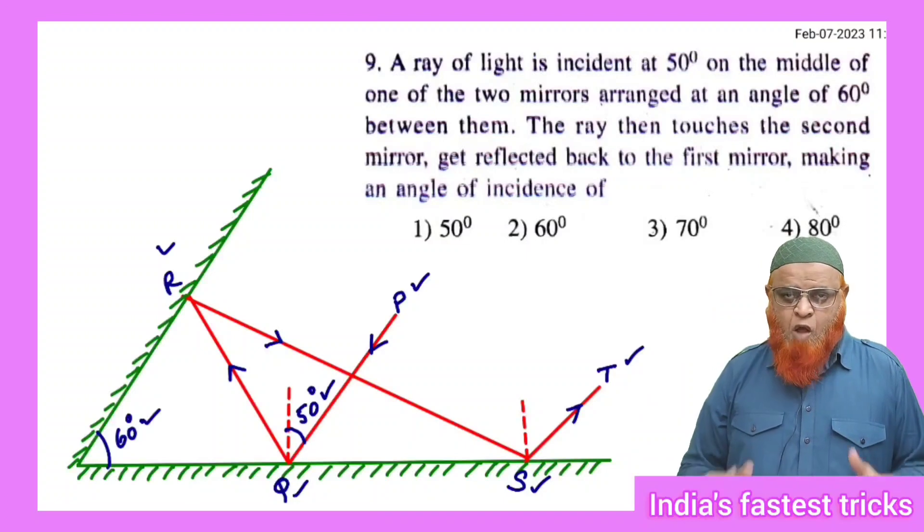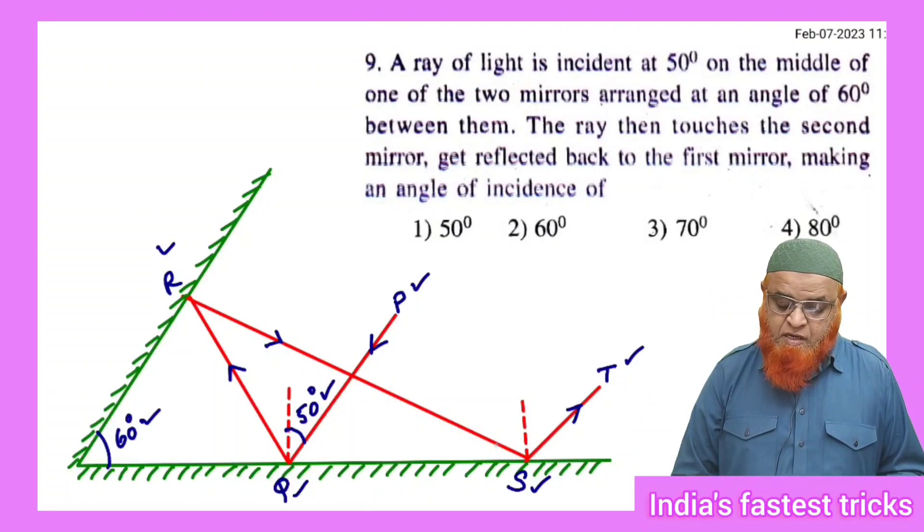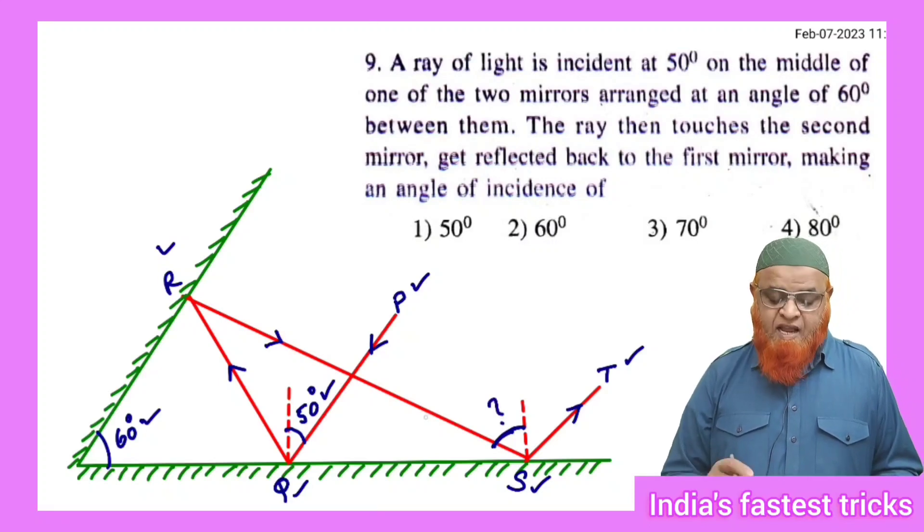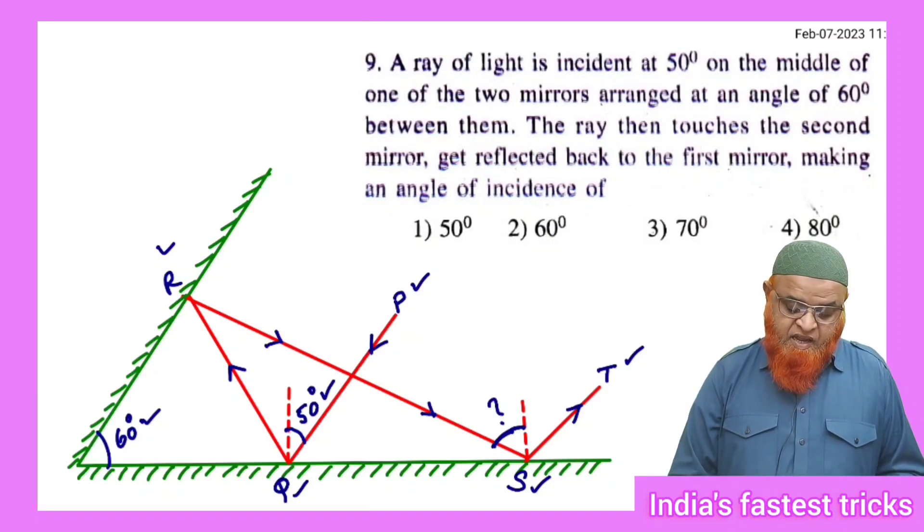So now how can you solve this problem? He is asking us to find out the angle made by the reflected ray after double reflection. What is the angle at this place?